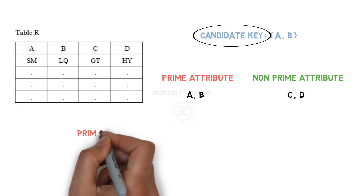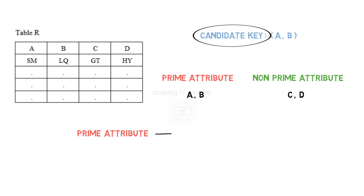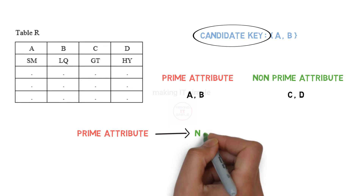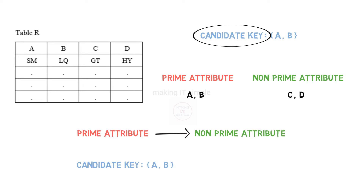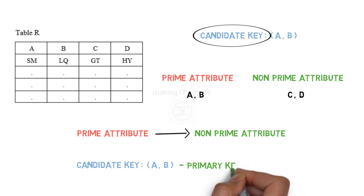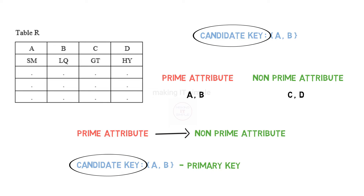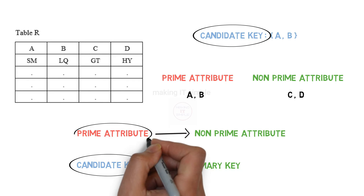By using prime attributes we can find or identify the non-prime attributes. Note that in this example we have a small relation with only one candidate key, and therefore that will become the primary key as well. But in many cases there can be multiple candidate keys present in a relation, and all attributes present in those candidate keys are called prime attributes.